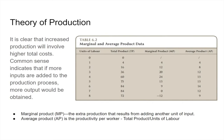We can also look at average product — how much on average is each worker producing? If we take total product and divide by the number of workers, we get average product. For example, two workers can produce 16, which is an average of eight per worker. Average product goes up, reaches a maximum, and then starts going down. Average product is best at four and five workers, where we're getting about 15 units per worker. The lower number — four workers — would be preferable.